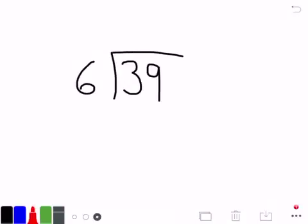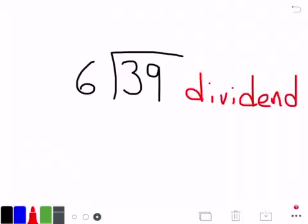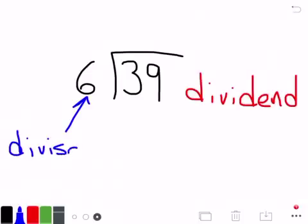So if we start with the problem, 39 divided by 6, we should know that 39 is our dividend. And that's the number that is being divided. That's the number that's being split up. 6 over here is our divisor. And we learned already, when words end with E-R, O-R, they're the one who does. So the 6 is the number doing the dividing.